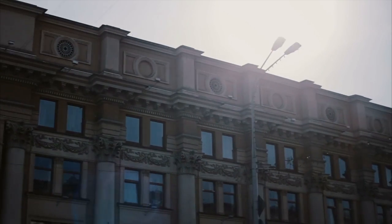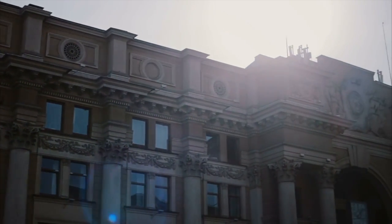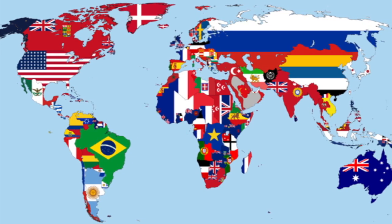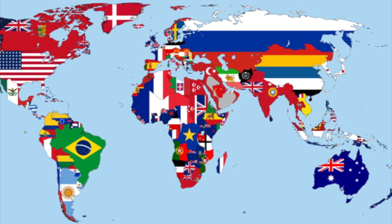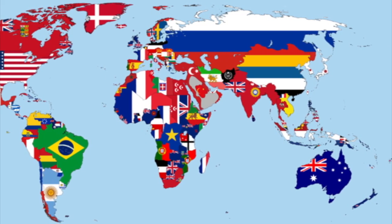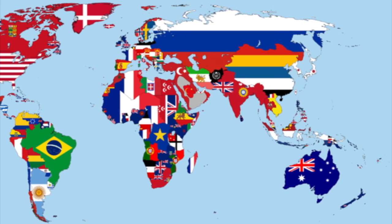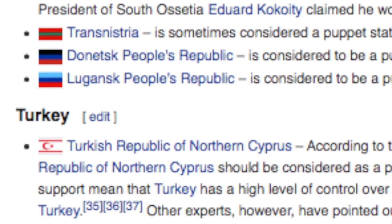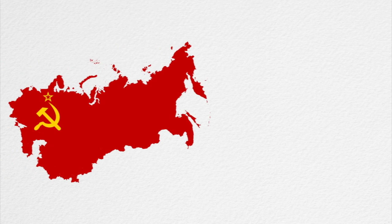So how does a country end up as a puppet state? Very simply, a puppet state can be formed by military defeat, government-sponsored coups, or partial absorption into a more powerful state. There are and have been numerous examples of puppet states throughout history in various different legacy servers, but most modern examples are at least some degree of controversial. Some of the most famous geopolitical puppeteers throughout history include the Soviet Union and Imperial Japan.